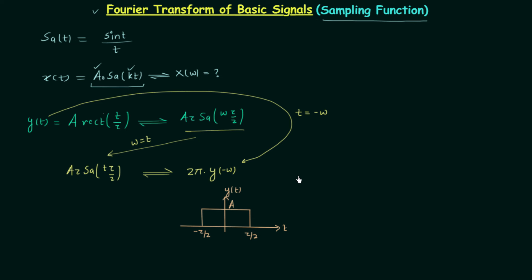Since we are replacing t by minus ω, we change the time axis to the frequency axis, and the signal we have is y(−ω). First we replace the time axis by the frequency axis to get Y(ω), which has the same waveform as y(t). We know from the waveform that it is an even signal, so after performing the reversal operation we will have y(−ω) with the same waveform, because even signals remain unchanged after reversal.